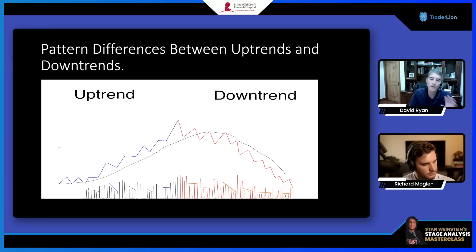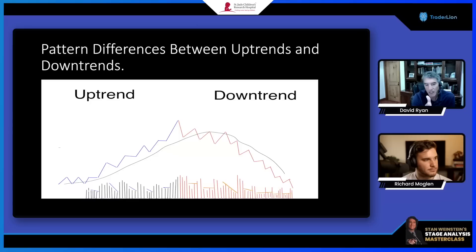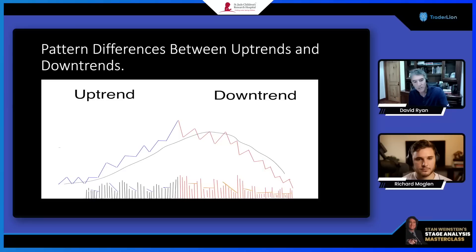I want to talk about pattern differences in uptrends and downtrends. This is very basic but I don't think people really key in on it. An uptrend has characteristics that are 180 degrees different than a downtrend — everything that happens in an uptrend is exactly the opposite of what happens in a downtrend.